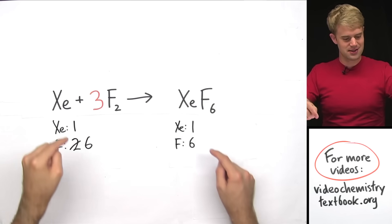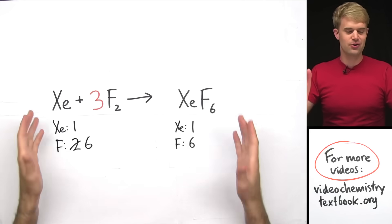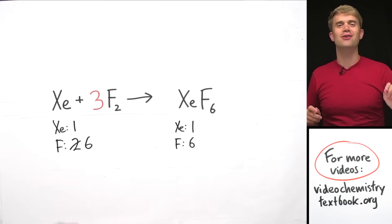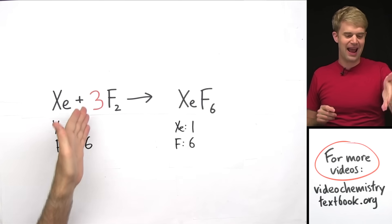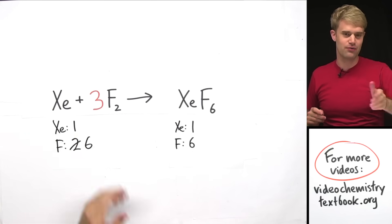One, one for the xenons, six and six for the fluorine — so now this is a balanced equation by adding this coefficient.